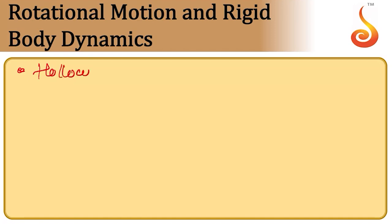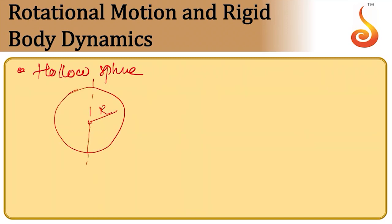For a hollow sphere of radius r, the moment of inertia about any diametrical axis is (2/3)mr². These are some important values worth remembering, as they are useful while solving problems.